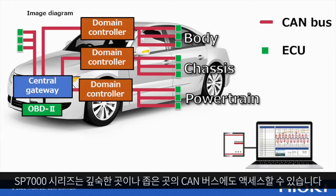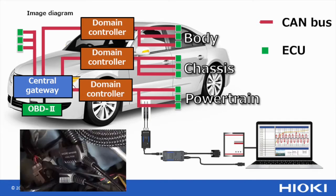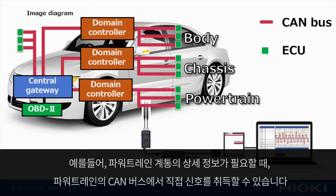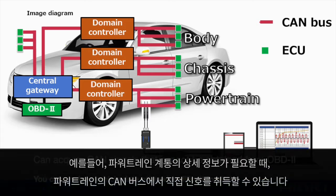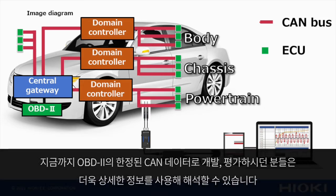However, with the non-contact CAN sensor, you can access all data on the CAN bus because you're able to get information directly from it, even from hard-to-reach places. For example, when evaluating the powertrain system, you can acquire all the signals from that area. This sensor allows you to bypass the OBD2 and access unfiltered, full CAN data.